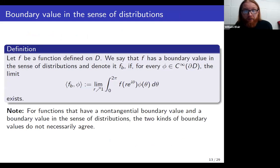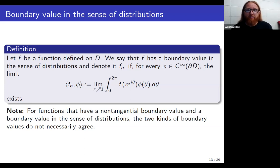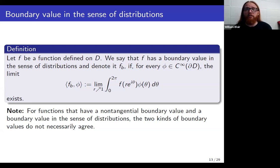To pursue that idea, we actually need a different notion of a boundary value. For f, a function on the disk, we'll say that f has a boundary value in the sense of distributions, denoted f sub b, if for every test function this limit — where we integrate the function around circles of radius r against our test function and take the limit as r goes to one — exists. That limit defines a distribution, which we call f sub b, the boundary value in the sense of distributions, or distributional boundary value.